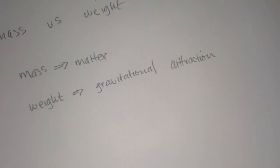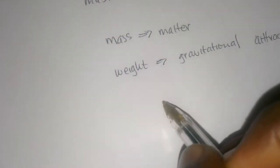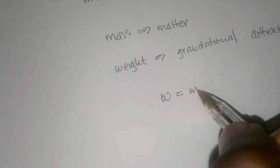Mass is the amount of matter from what we're taught in high school. How are these two related? Simple formula: W equals mg.